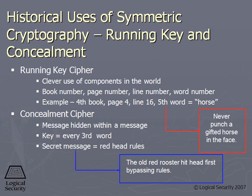The first number could mean go to the fourth book — you go to the fourth book. The next number is four, so you go to the fourth page. The next number is 16, so you go to the 16th line. The next number is five, and that's the word. You write that down, and you do that for each set of numbers I sent over to you, until you get the full message.